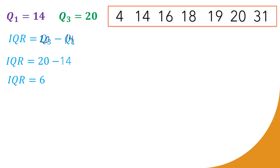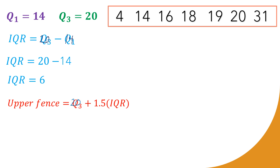After step 3, steps 4 and 5 are to set up the fences. Let us start with the upper fence: upper fence = Q3 + 1.5 × IQR. Our Q3 is 20 and our IQR is 6. Multiplying 6 by 1.5 gives us 9, then adding 9 to 20 gives us 29.